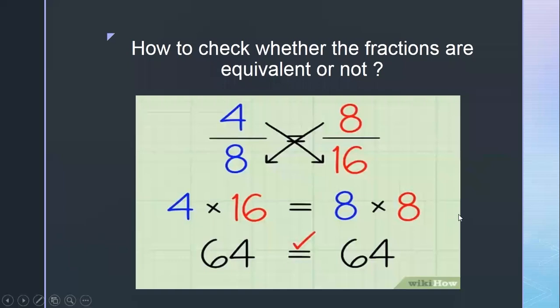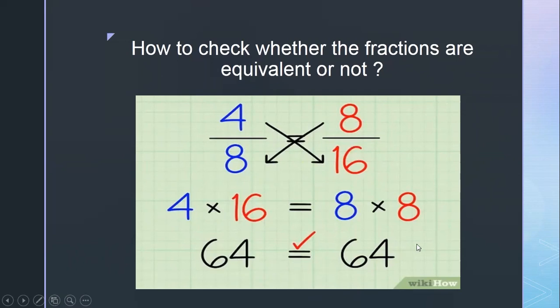How will you check whether a given fraction is an equivalent fraction or not? In your exam, you will be given two fractions. To check, you will cross multiply. For example, four upon eight and eight upon sixteen: four multiplied by sixteen gives sixty-four, and eight multiplied by eight also gives sixty-four. Since cross multiplication gives the same number, they are equivalent fractions.